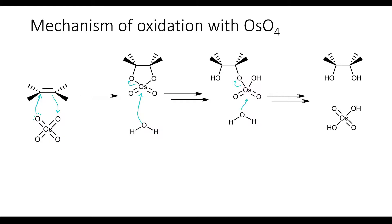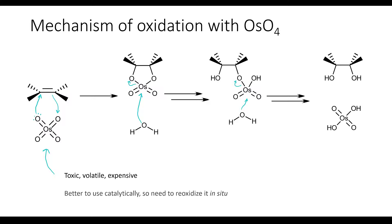A few things to note about osmium tetroxide: it's toxic, volatile, and expensive, so we probably don't want to use this stoichiometrically. Instead, it would be better to use this compound catalytically, and in order to do so we would need to re-oxidize it in situ.